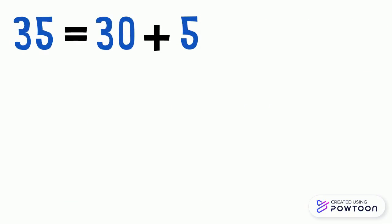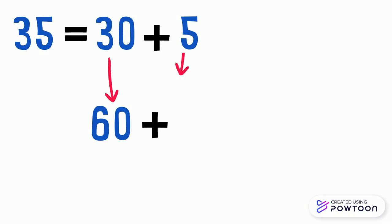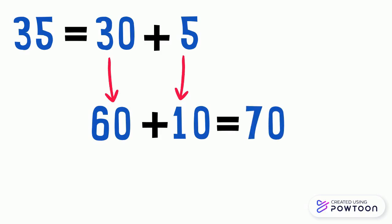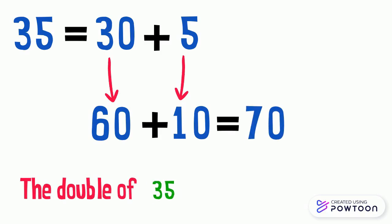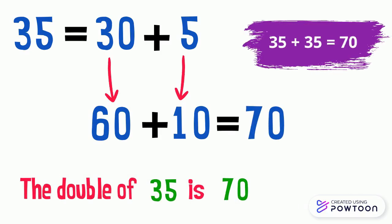The double of 35. 35 equals 30 plus 5. The double of 30 is 60 and the double of 5 is 10. 60 plus 10 equals 70. The double of 35 is 70, so 35 plus 35 equals 70.